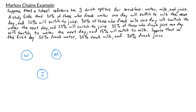It says that 20% of those who drank water one day will switch to milk the next day, so I'm going to draw an arrow from water to milk and label it with 0.20. Then 10% will switch to juice, so I draw an arrow from water to juice labeled 0.10. This only accounts for 30% of those who drank water, so the remaining 70% must stick with water the next day. I'll draw an arrow from water to itself labeled 0.70.